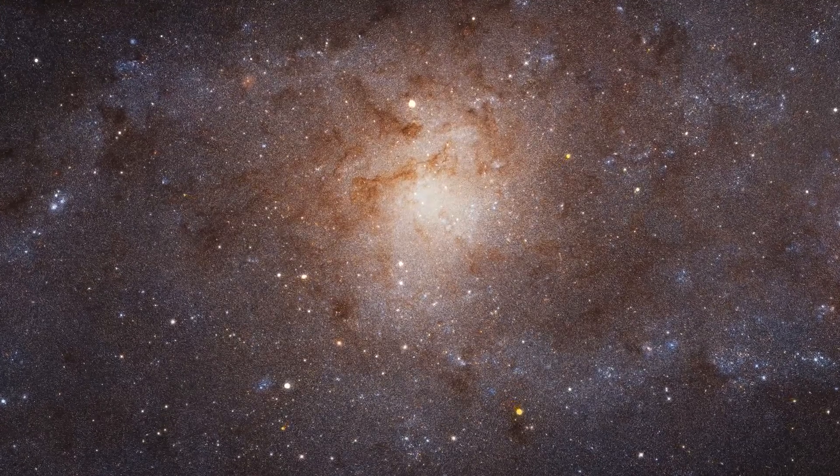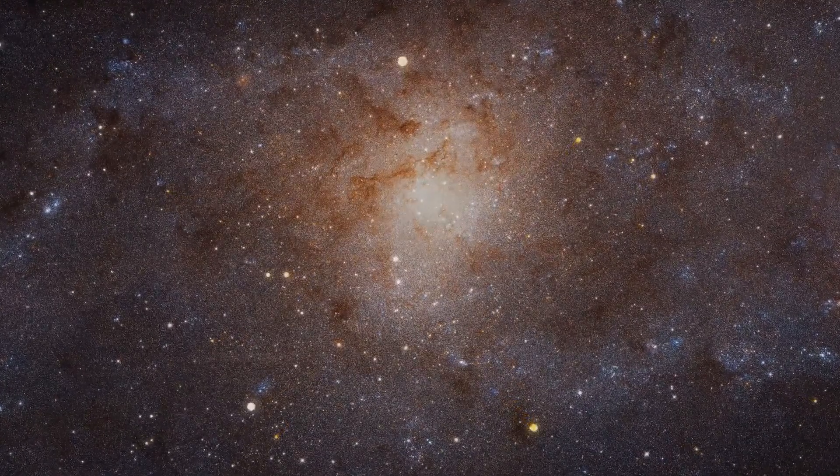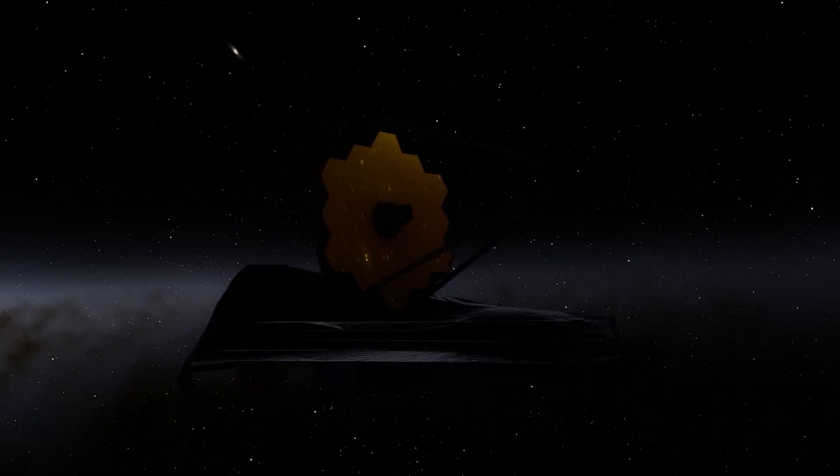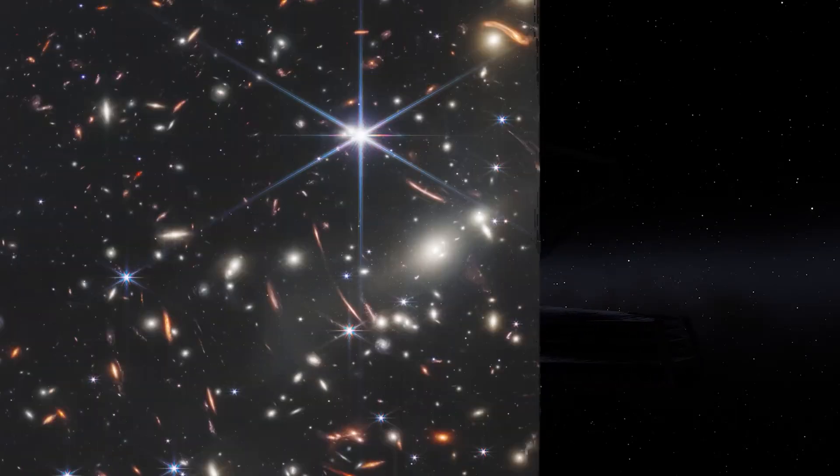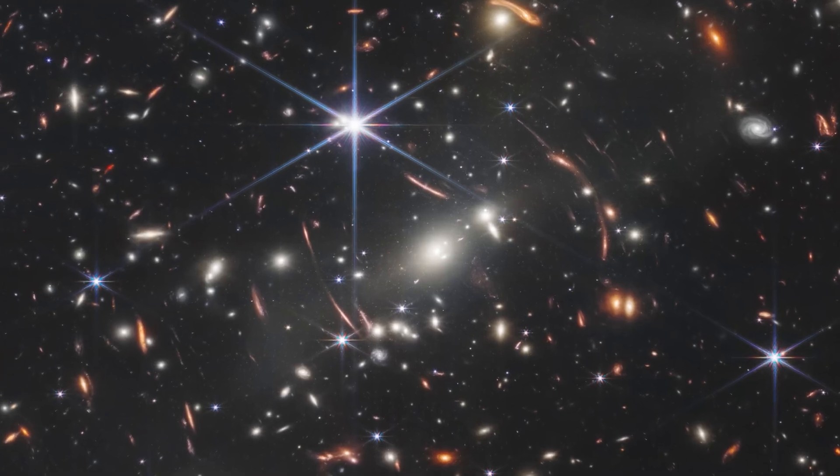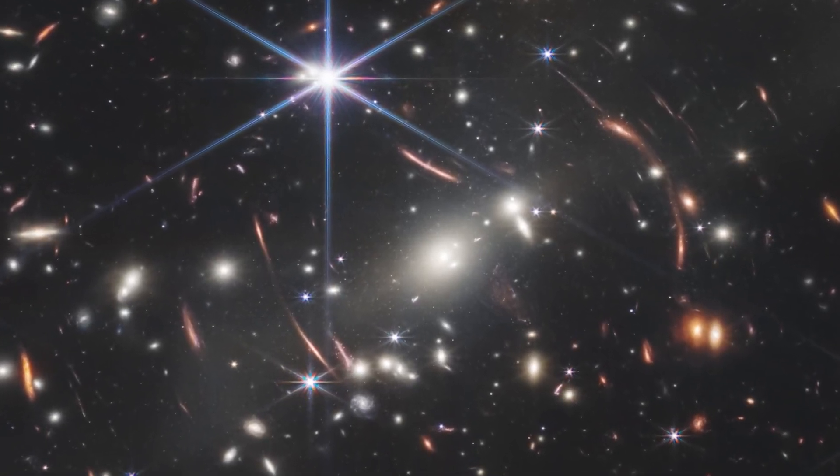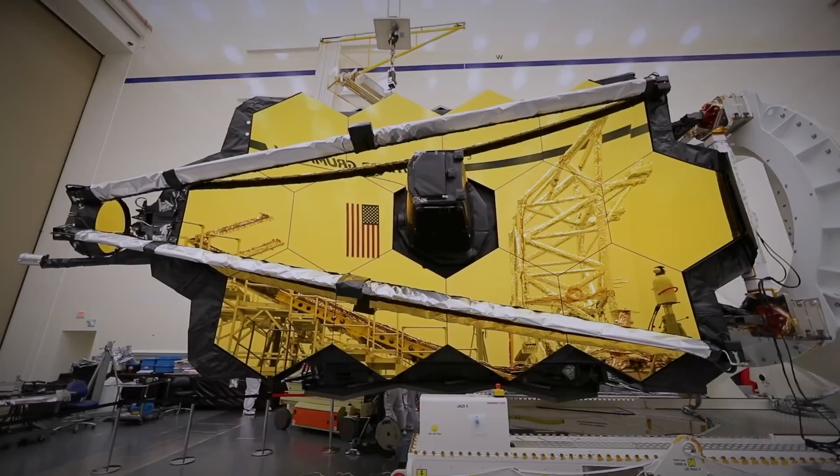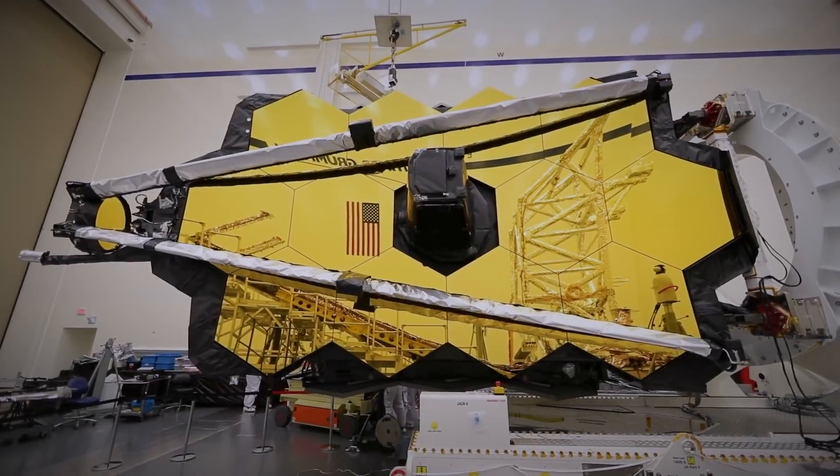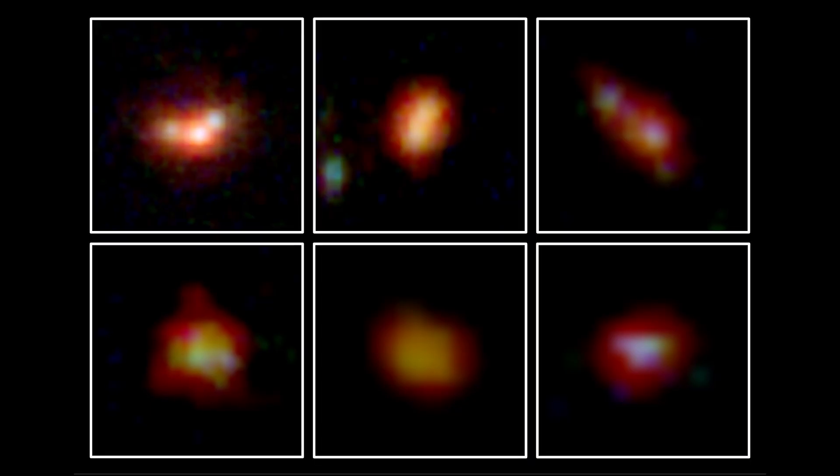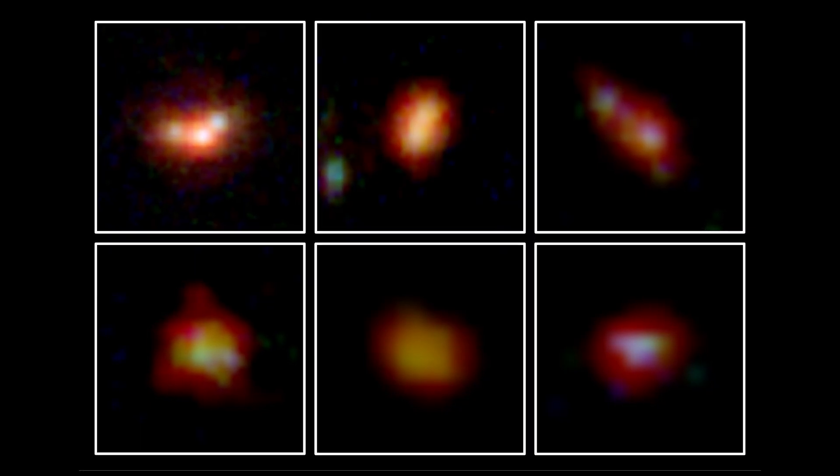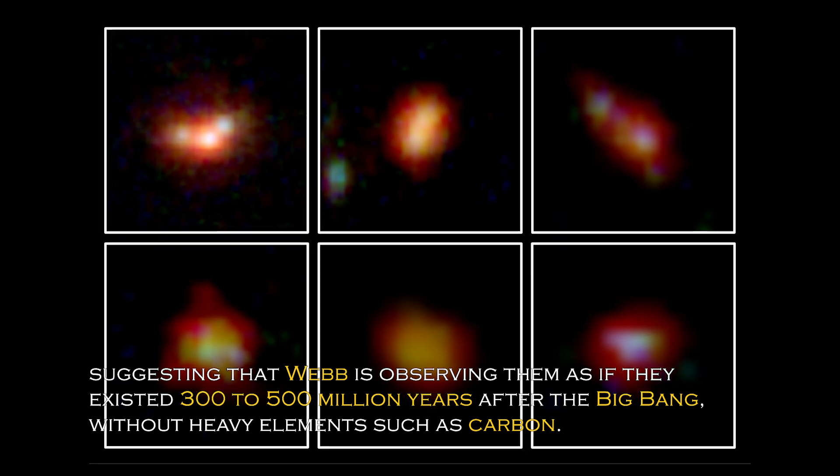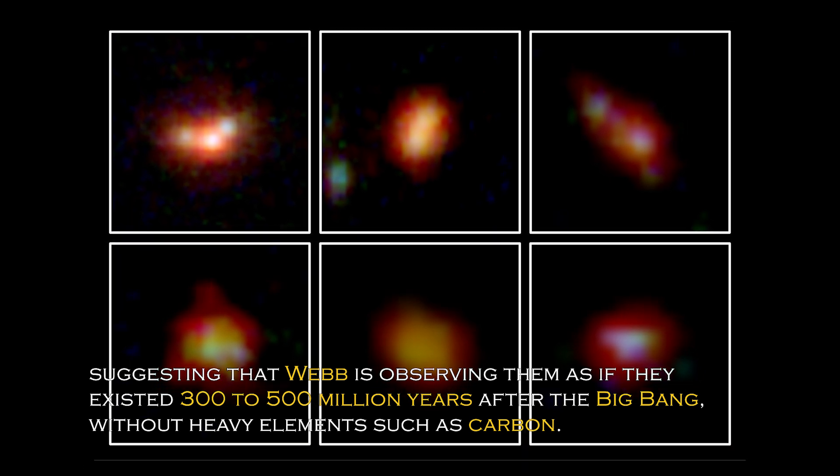Discovery has had a major impact on our understanding of the universe and has prompted NASA to develop even more powerful telescopes than the James Webb Space Telescope to confirm whether our understanding of the Big Bang is correct. Data obtained from Webb's spectrometer and near-infrared camera have revealed that four of the six primordial galaxies have extreme redshifts, suggesting that Webb is observing them as if they existed 300 to 500 million years after the Big Bang.